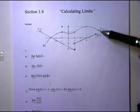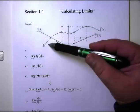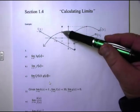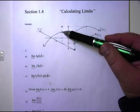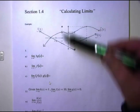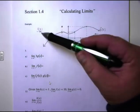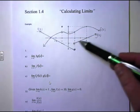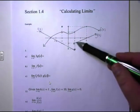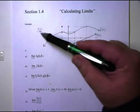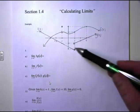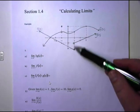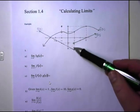I've got f of x, which is on top. There's a little hole here at negative 1 and the dot's there. And I've got another graph, g of x, which is the graph on the bottom. And it's got a break — it's a discontinuous function right here at positive 1.